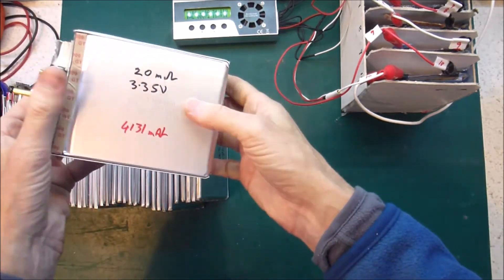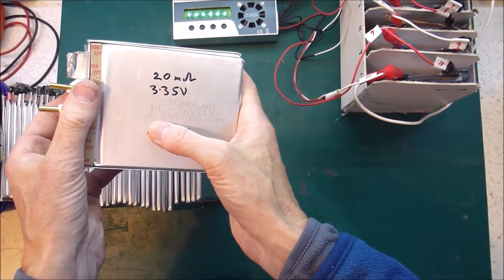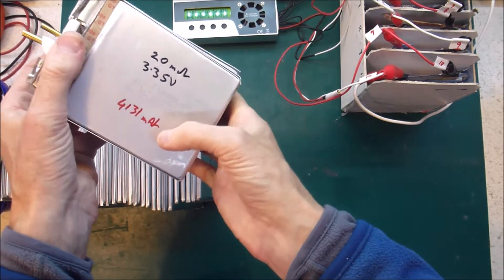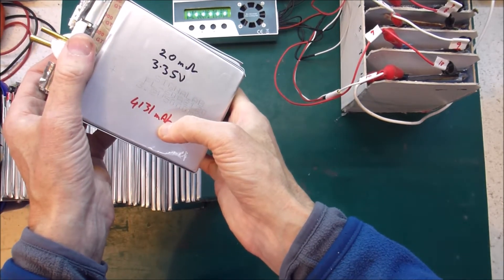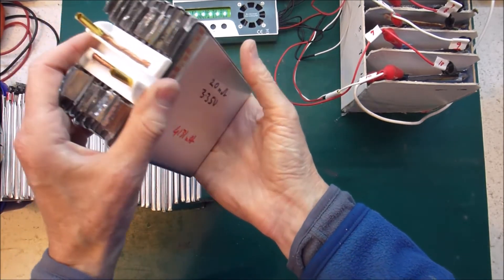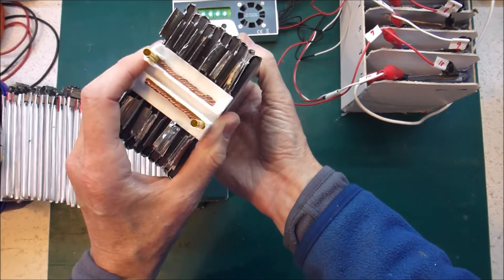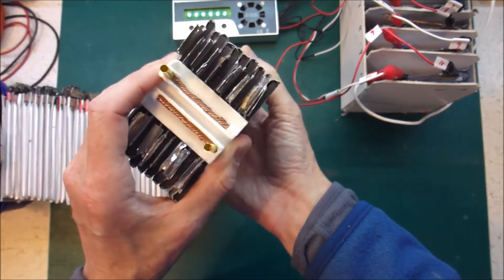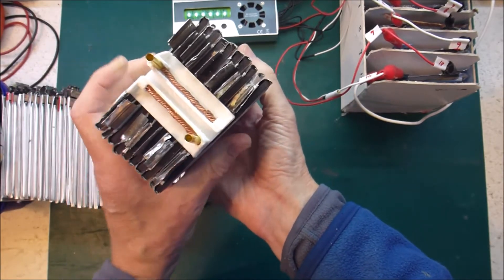These are 3.2 volt nominal cells and roughly 4000 milliamp hours, 4.5 thousand milliamp hours. So when you multiply that by 10 you get quite a nice amount of power.